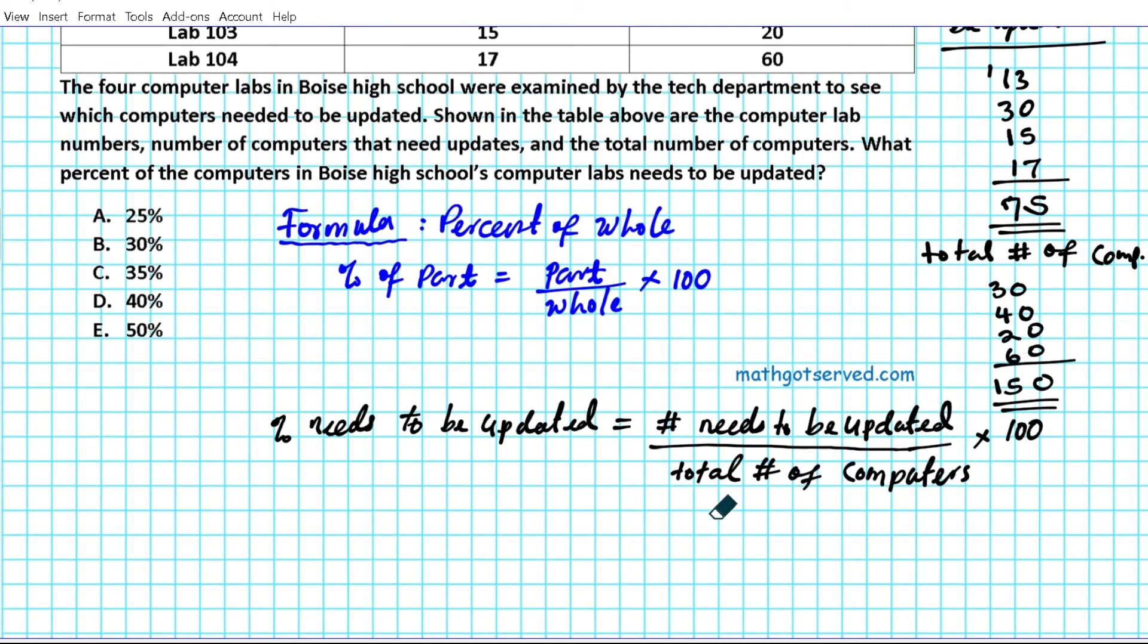Let's go ahead and plug in these two values into our formula. The number that needs to be updated is 75 divided by the total number of computers, which is 150, and we'll multiply that by 100 to convert it to percent form. Now, if you notice, 75 is a multiple of 150. 75 times two is 150, so we can divide this by 75, that gives you one, and divide 150 by 75, that gives you two. And two goes into 100 because 100 is even. So two goes into itself one, two goes into 100 fifty times, and your answer is 50%.